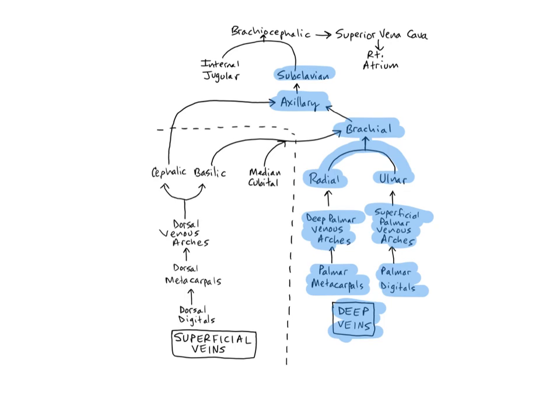The subclavian veins are continuations of the axillaries and unite with the internal jugular veins to form the brachiocephalic veins. The subclavian veins drain the skin, muscles, and bones of the arms, shoulders, neck, and superior thoracic wall.